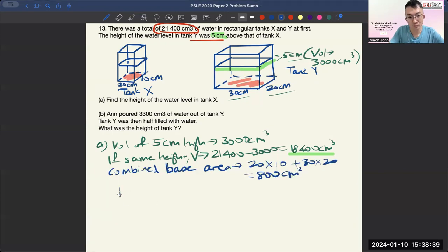Okay, and then for the height, you take the combined volume divided by the combined base area, and the height is going to be the same everywhere. This is what we call same height expression, and it's 23 cm, okay, and that's the answer for this.